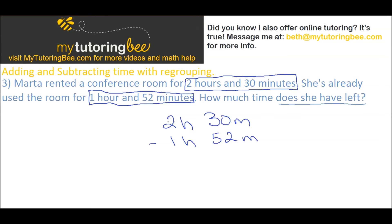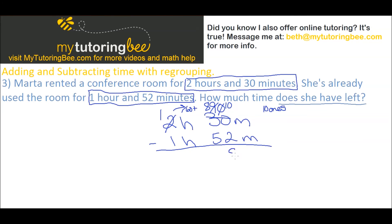Just like before, we need to regroup because 30 is not enough to take away 52. I take away from the hours place — that's 60 minutes added to the 30 I already have, giving 90 minutes total. But now there's another regrouping issue: 0 is not enough to take away 2, so we switch to base-ten regrouping. That 0 becomes 10, and 10 minus 2 is 8. Then 8 minus 5 is 3, and 1 minus 1 is 0 — leaving us with 38 minutes.